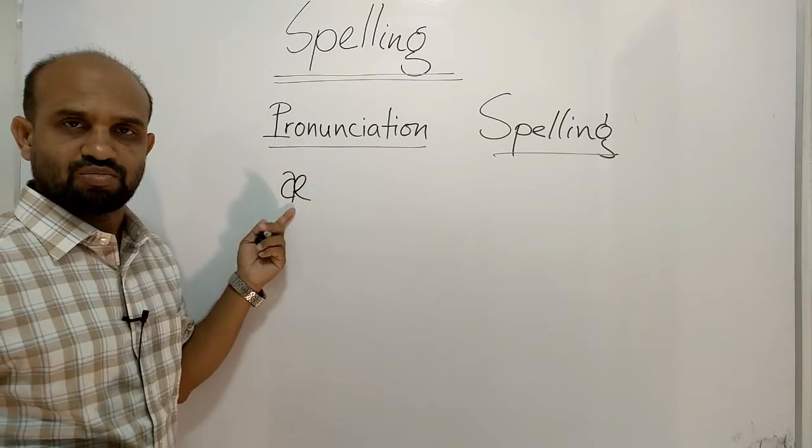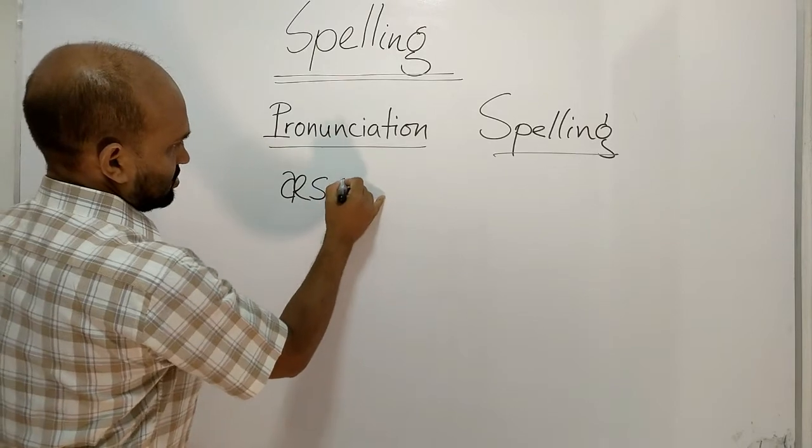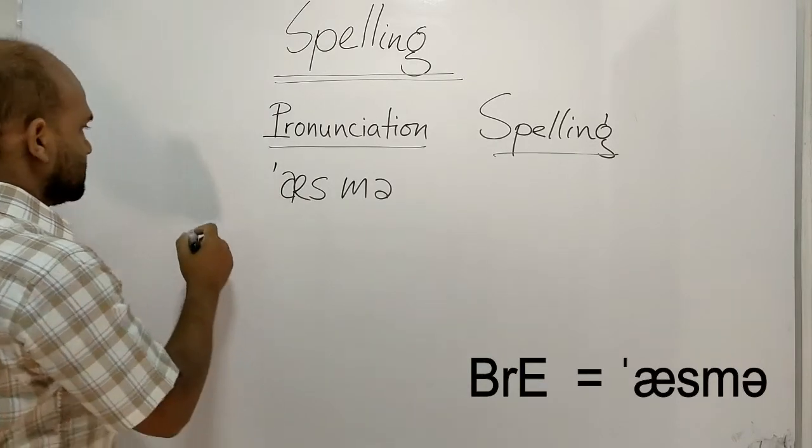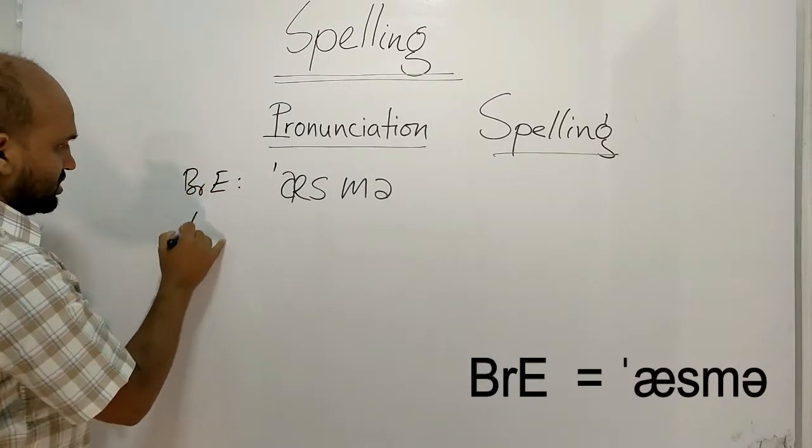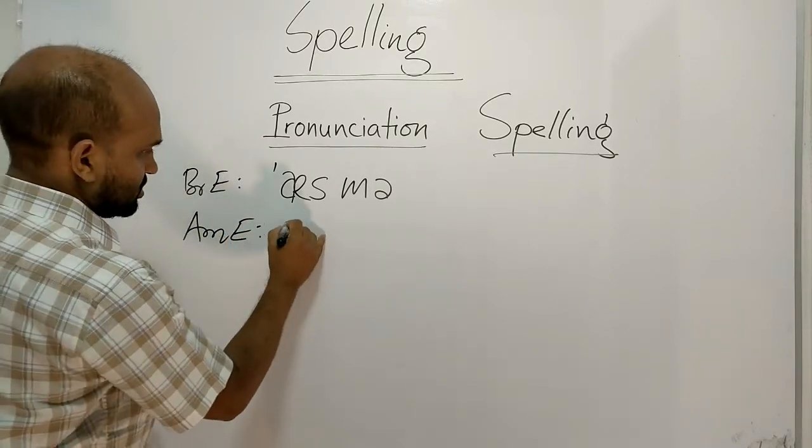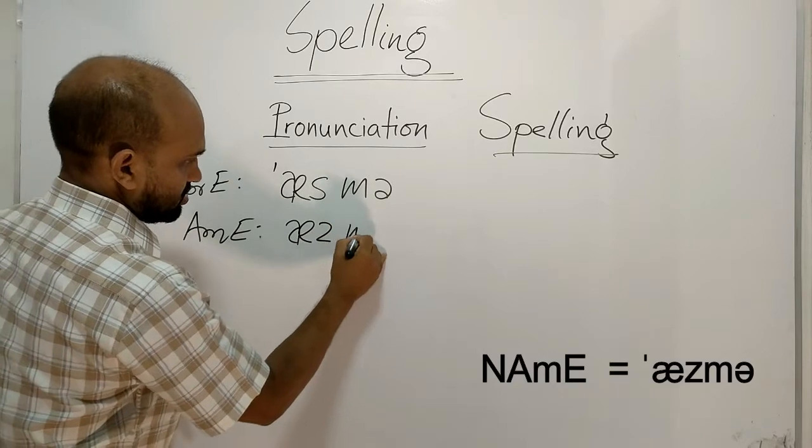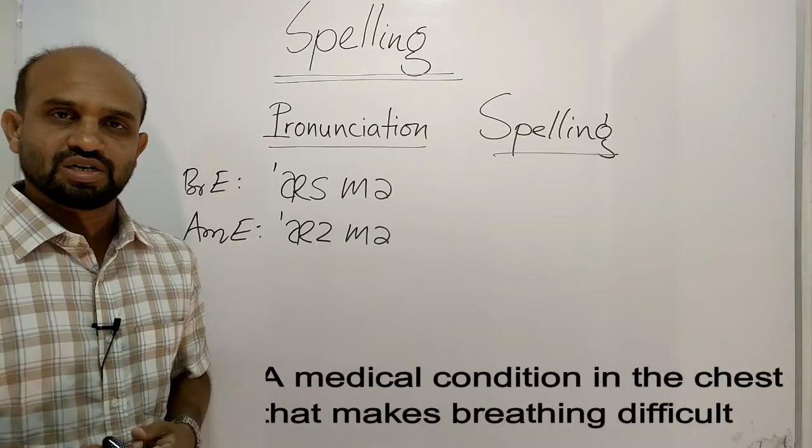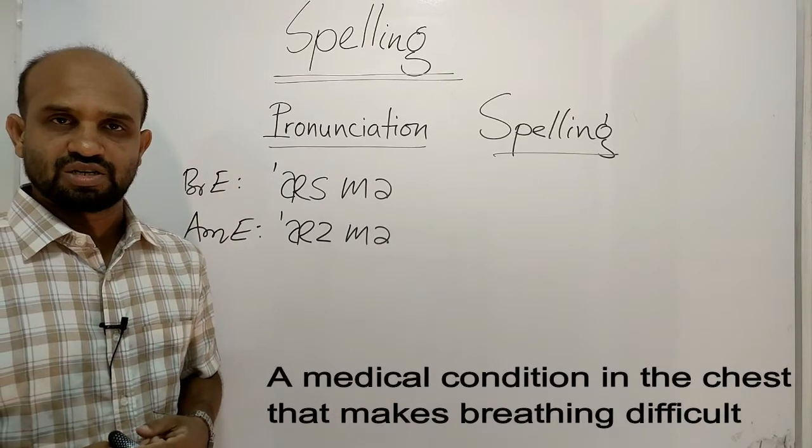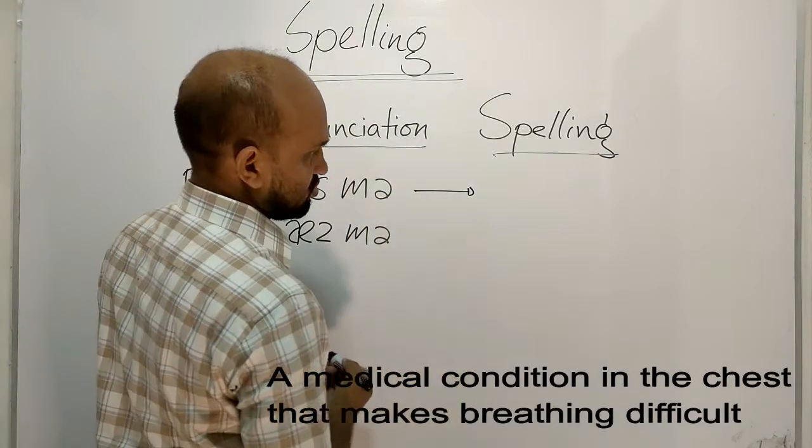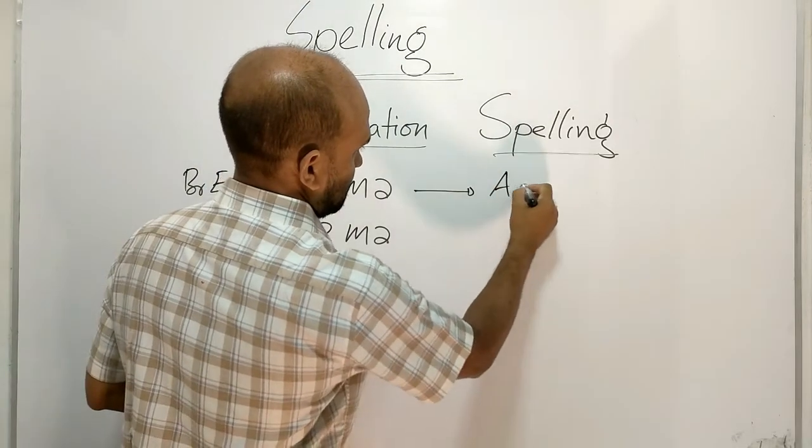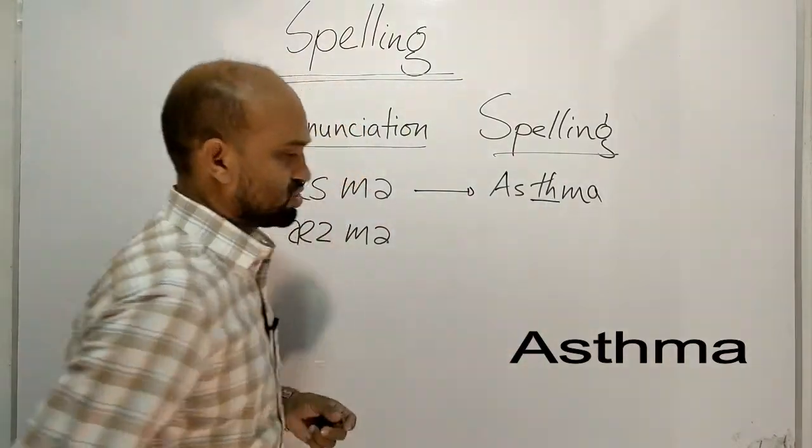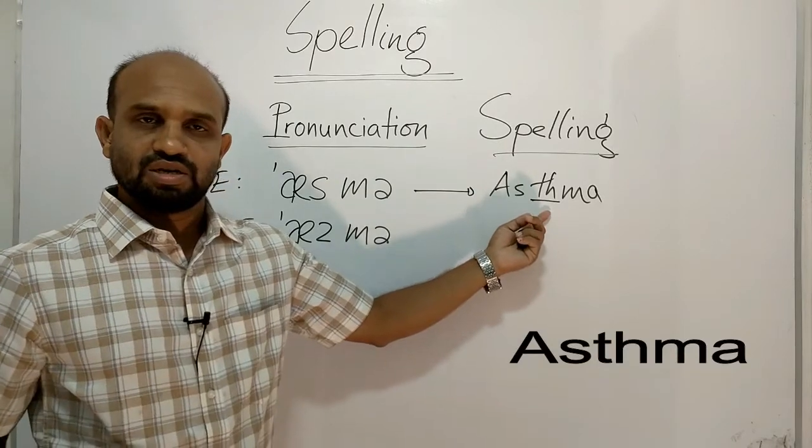This is a phonetic symbol that makes sound asthma, asthma. This sound is in British English and in American English the sound is asthma. The meaning is a medical condition in the chest that makes breathing difficult. The spelling of this word is A-S-T-H-M-A, asthma. Here these two letters T and H remain silent.